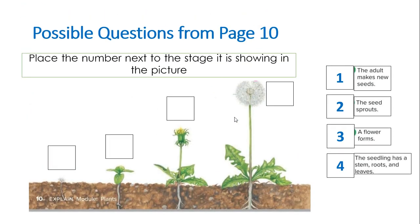This process is called a life cycle. You may be asked to explain what is happening in a picture, or you may be given numbers to match to the picture, or you may be given nothing and asked to write all of the parts in. Please make sure you study what is happening in the picture and are able to write it out.